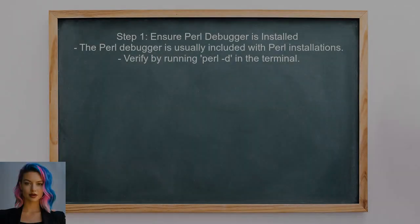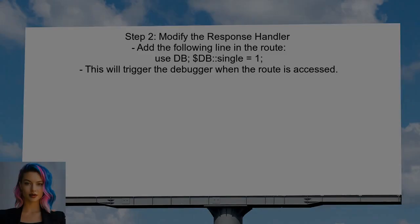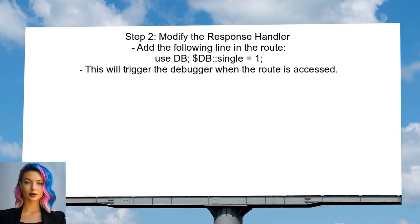To attach a debugger to the Dancer2 application, first ensure that you have the Perl debugger installed — this is typically included with Perl distributions. Next, modify the response handler in the Dancer2 application and add a line to enable the debugger when the specific route is accessed.